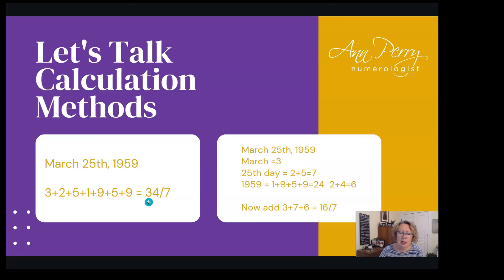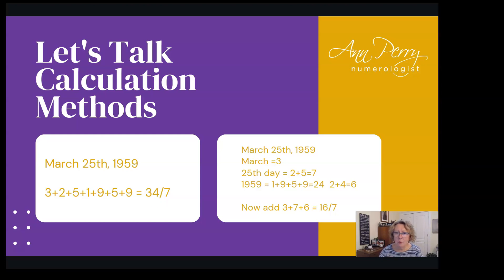If this were in fact my life path number, it would mean I'd agreed to come to learn the sub-lessons related to the number three — all about learning how to express yourself, not be so self-critical, expressing yourself in a creative way with a sense of humor. The four relates to stability, process, focus, one step after the other — being a builder. I felt I already had those things, which caused me to go looking for a different method.